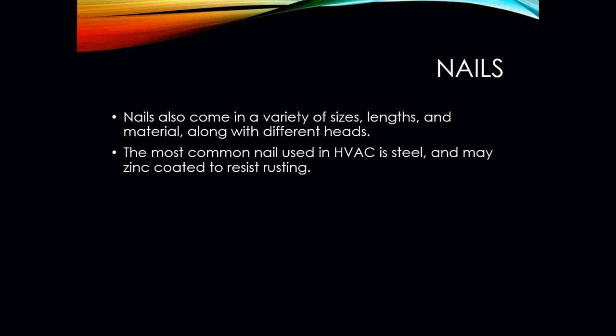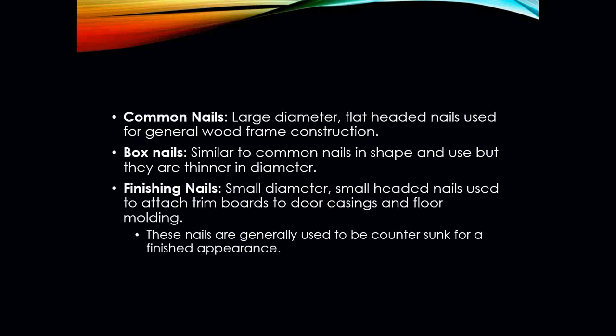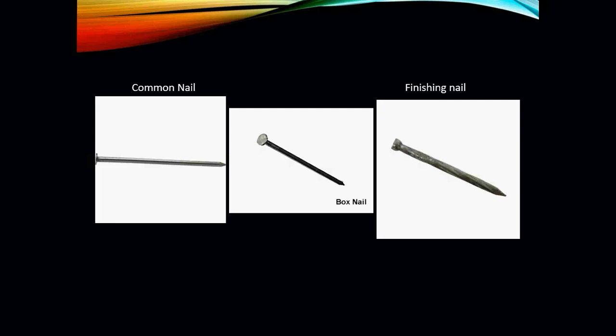Nails also come in a variety of sizes, lengths, and materials, along with different heads. The most common nail for HVAC is going to be steel, and they may have a zinc coating to resist rusting. Your common nails have large diameters and flat heads, used for general wood framing and construction. Box nails are similar to common nails in shape but thinner in diameter. Finishing nails have a smaller diameter and a smaller head, used for attaching trim boards to doors and casings — basically more for finish work.